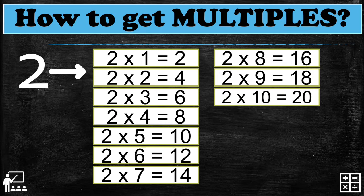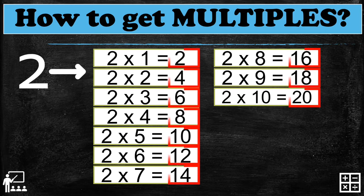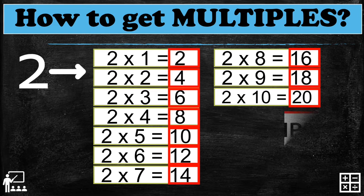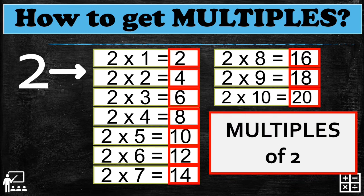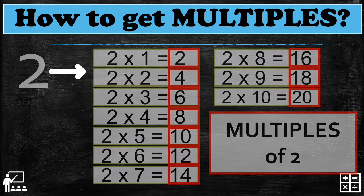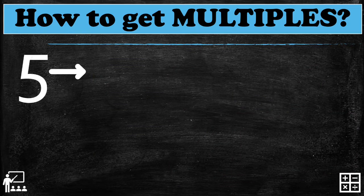This table has two as our base number, and one up to ten is our other number. Where is the product — the multiples of two in this table? The multiples of two are: two, four, six, eight, ten, twelve, fourteen, sixteen, eighteen, and twenty. This table is what's called the multiples of two.